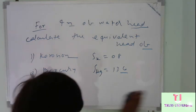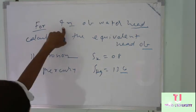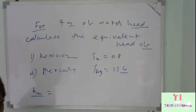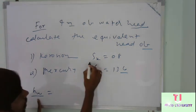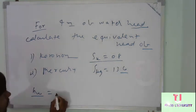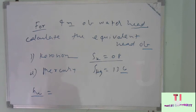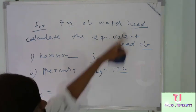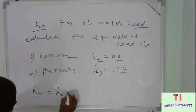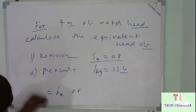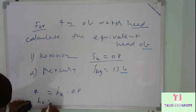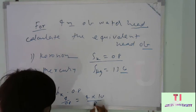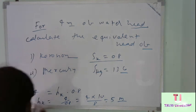As explained previously, to calculate the equivalent kerosene head for 4 meters of water head, the expression is: water head equals the kerosene head multiplied by 0.8. So 4 equals H times 0.8, which gives H equals 4 divided by 0.8. Therefore, the equivalent kerosene pressure head is 5 meters.